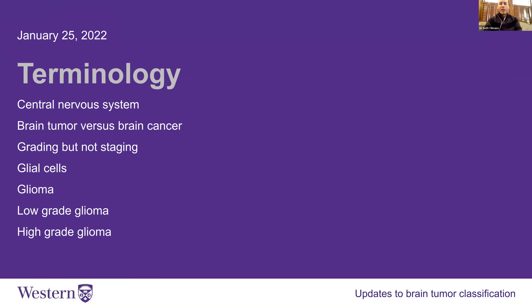A brain tumor, as opposed to brain cancer, usually refers to a low-grade tumor — meaning grade one or two — whereas brain cancer is usually grade two, three, or four. We grade our brain tumors; we don't tend to stage them. Staging refers to where a cancer has gone in the body. Brain cancer tends to stay within the brain or spinal cord, so we really care about what it looks like under the microscope and its molecular features. A grade is one, two, three, or four, where one is low grade and four is high grade.